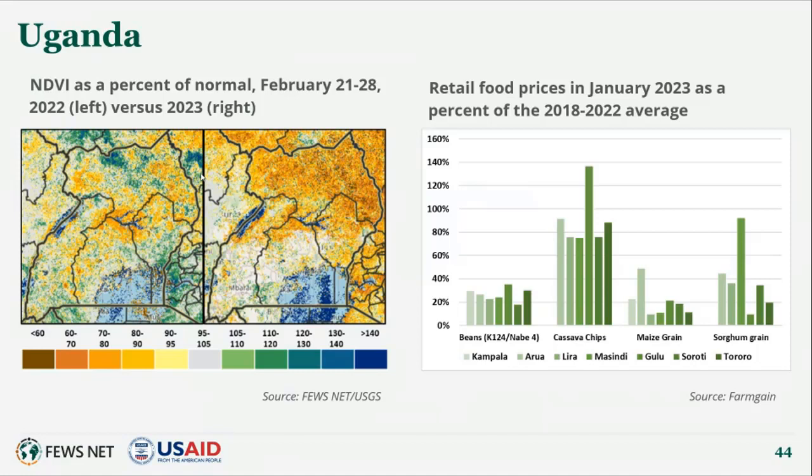In the coming months, there is an expected shift in targeting from settlement location to needs-based targeting for refugees, likely resulting in adjustments to ration sizes. Although stressed exclamation point outcomes are expected in refugee camps overall, an increasing number of refugees are expected to face crisis outcomes with the likely lower rations.